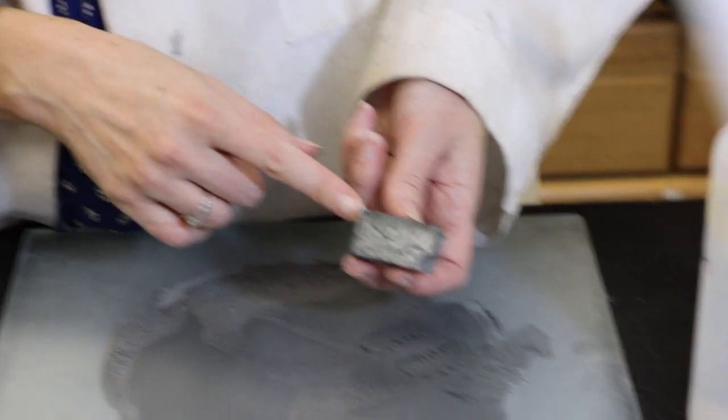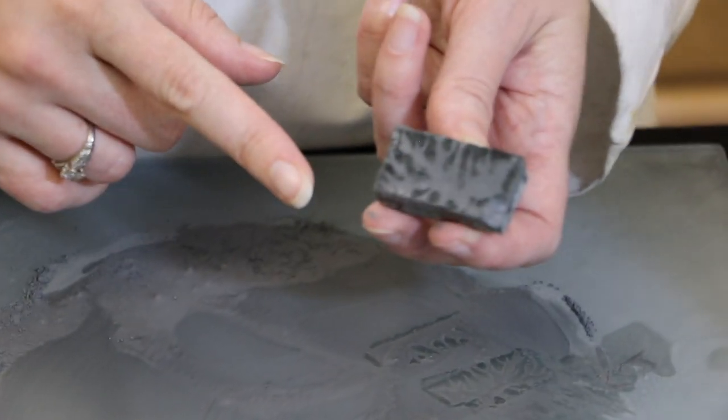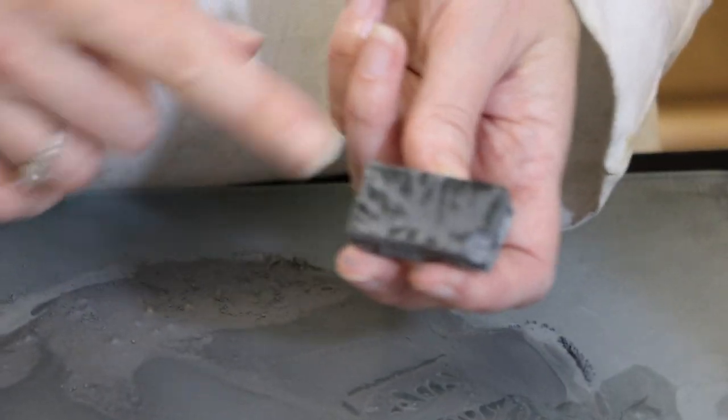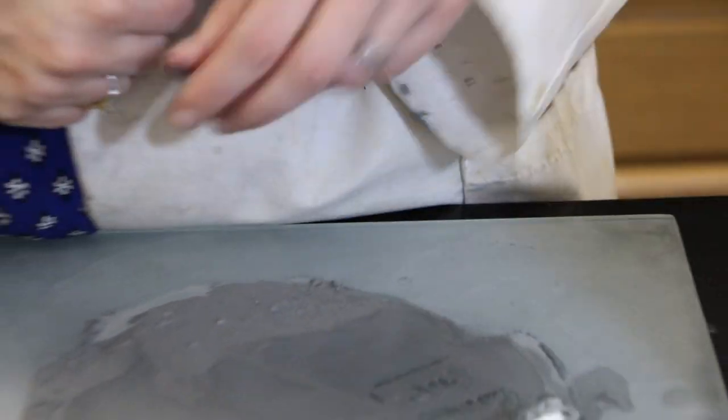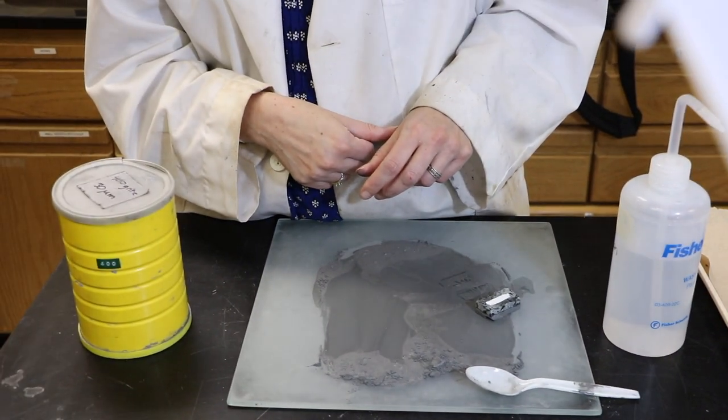For thin sections, if you go down to 9 micrometers polishing grit and have a nice shiny surface, you're good to go. That's just some guidelines on how to polish on a glass slide.